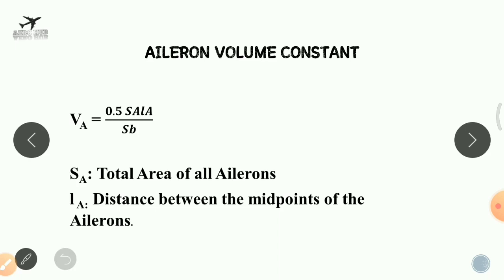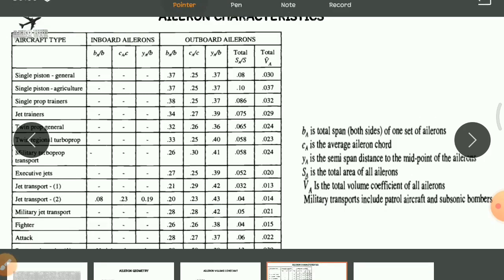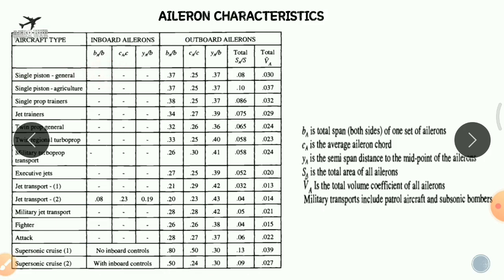The aileron characteristics depend upon the engine type of the aircraft. There are different types of engines used in aircraft, and the selection and sizing of the aileron depends upon the engine characteristics. As shown in the table, we have categories such as single-engine general aviation and other aircraft types. The ratio BA by B represents the total span of one set of ailerons divided by the total wing span.